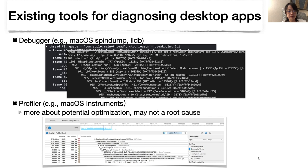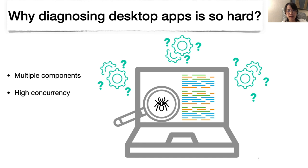One reason for the diagnosis challenge is the execution of modern desktop applications usually involves multiple components. They communicate with daemons, services, and helper tools. They also divide the processing of user input into highly concurrent tasks. As a result, we need to understand the complex causalities among many tasks.